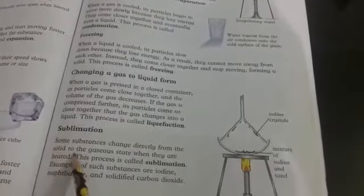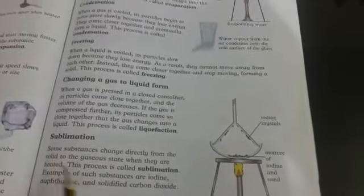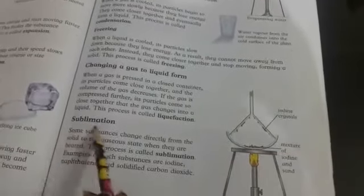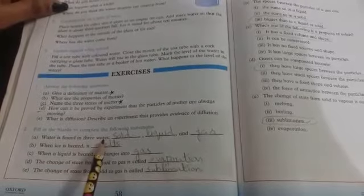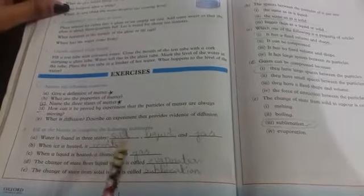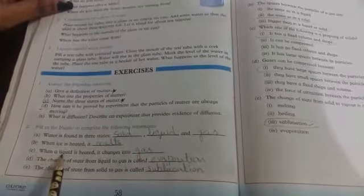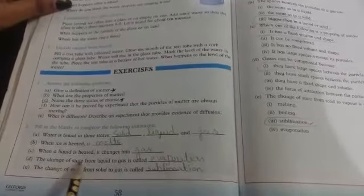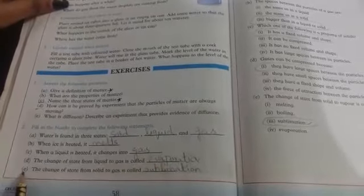In sublimation, the solid particles are changed into the gas state. Moving on to filling in the blanks, you have to do this question in your book. A. Water is found in three states: solid, liquid, and gas. B. When ice is heated, it melts. C. When a liquid is heated, it changes into gas. D. The change of state from liquid to gas is called evaporation. E. The change of state from solid to gas is called sublimation.